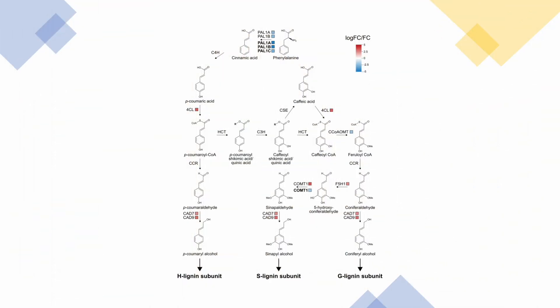We have extensive data from proteomics, expression analysis, and metabolomics that pretty much all show the same thing: that the decrease in lignin is due to decreased flux through the first step in the lignin biosynthesis pathway, caused by a downregulation of phenylalanine ammonia lyase (PAL) activity.